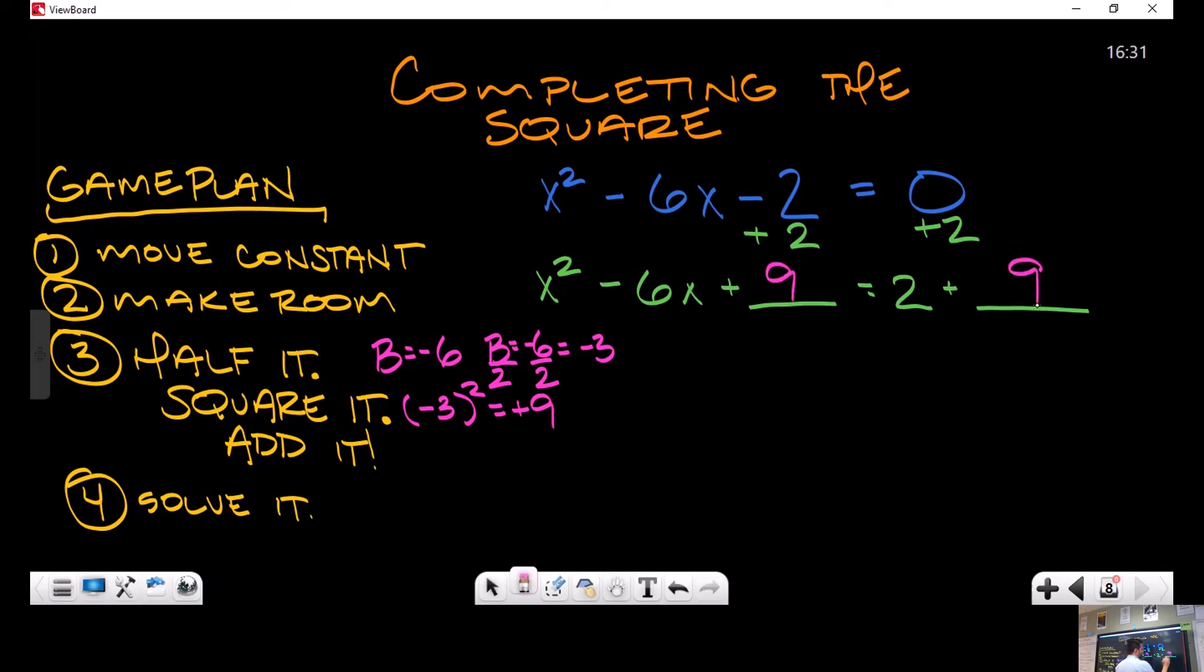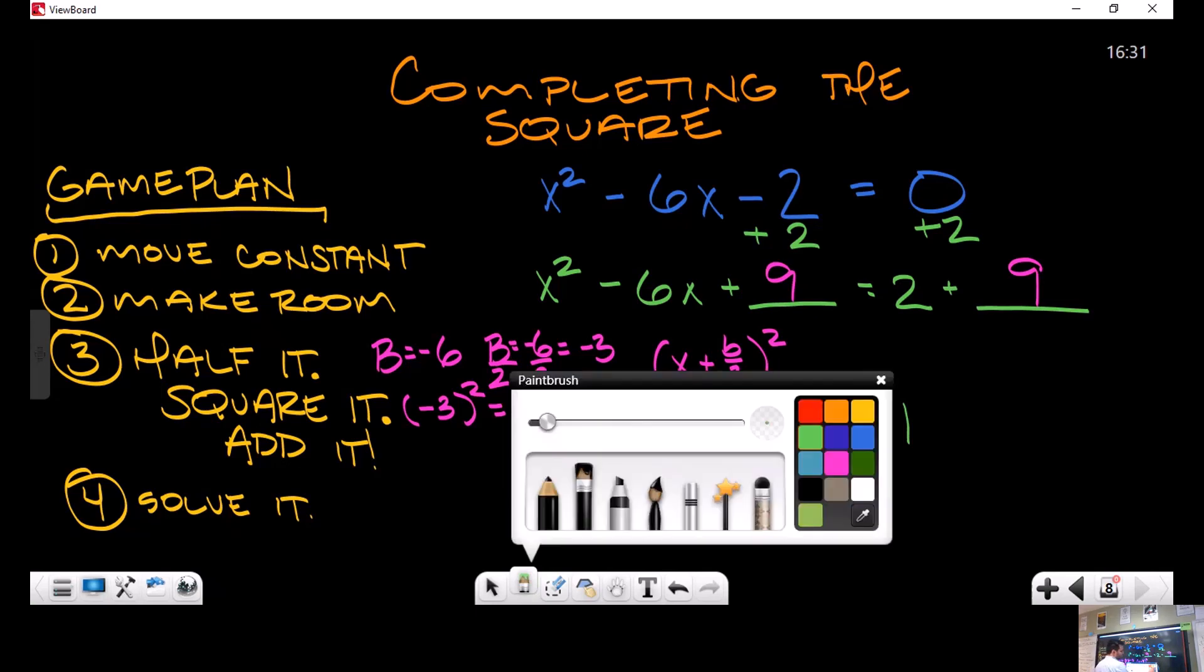We have intentionally created a perfect square here. This perfect square is (x + b/2)² equals something over there. In this case, this equation is going to look like this: x + b/2, which is really x - 3, so (x - 3)² equals 2 + 9, which is 11.